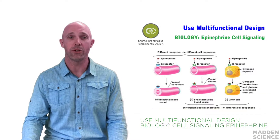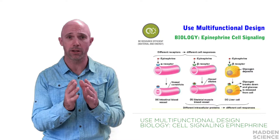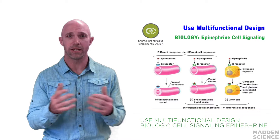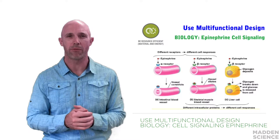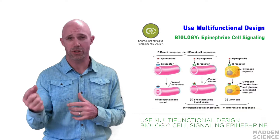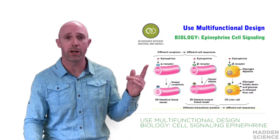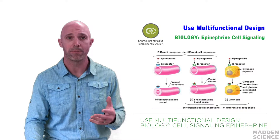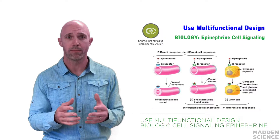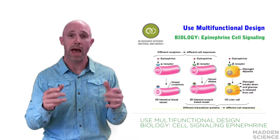Cell signaling pathways use multifunctional design. Cell signaling in general relies on a relatively small number of signal molecules; often these signal molecules have many functions and send different signals. When epinephrine is released, initiating a fight-or-flight response, it does multiple things, and these functions depend on the location where it is received. As this figure illustrates, three possible outcomes happen. In each of the three cases, the signal — epinephrine — is the exact same. The first two pictures show the effects of different receptor proteins: alpha versus beta.